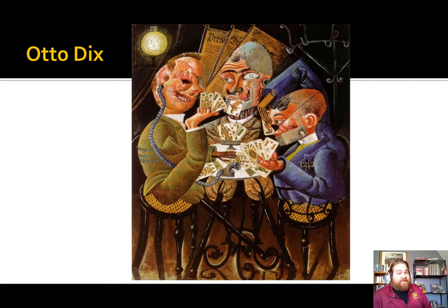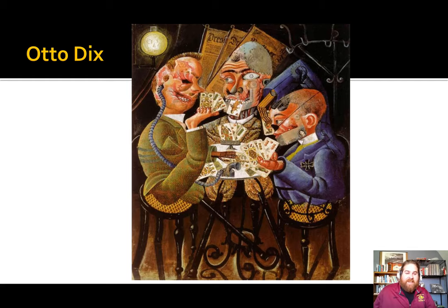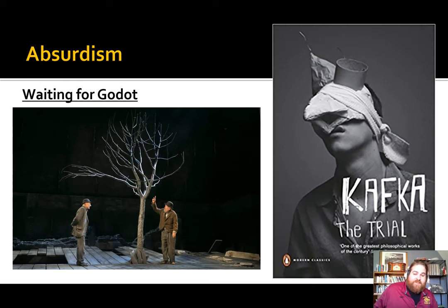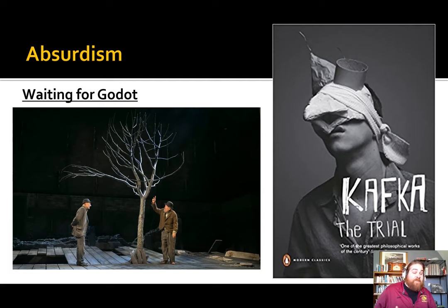Pablo Picasso becomes big in this time with his cubism phase, which has a really big impact on art around the world but also on theater and novels. Kafka's The Trial — maybe you've read The Metamorphosis — relies on very absurd premises to make points. And if you've heard of Waiting for Godot, it is a play where two guys stand around talking for several hours, and every time they're going to leave they have to wait for Godot. The play ends and Godot never comes.